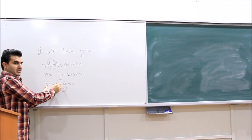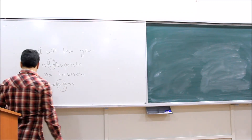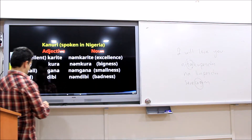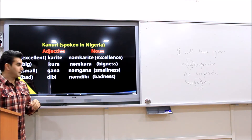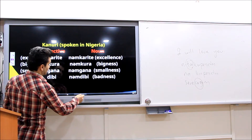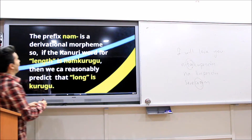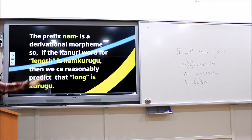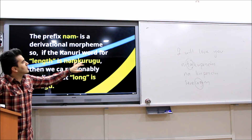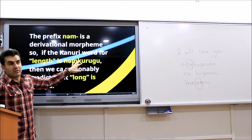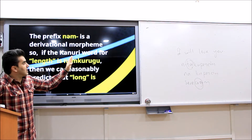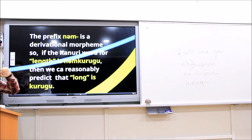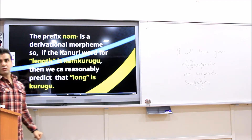It's inflectional. So the prefix 'num' is a derivational method. The canonical word for length is 'numkru,' which is a noun. Now, if you omit 'num,' then 'krugu' means 'long,' as an adjective. We can reasonably predict that 'long' is 'krugu.'